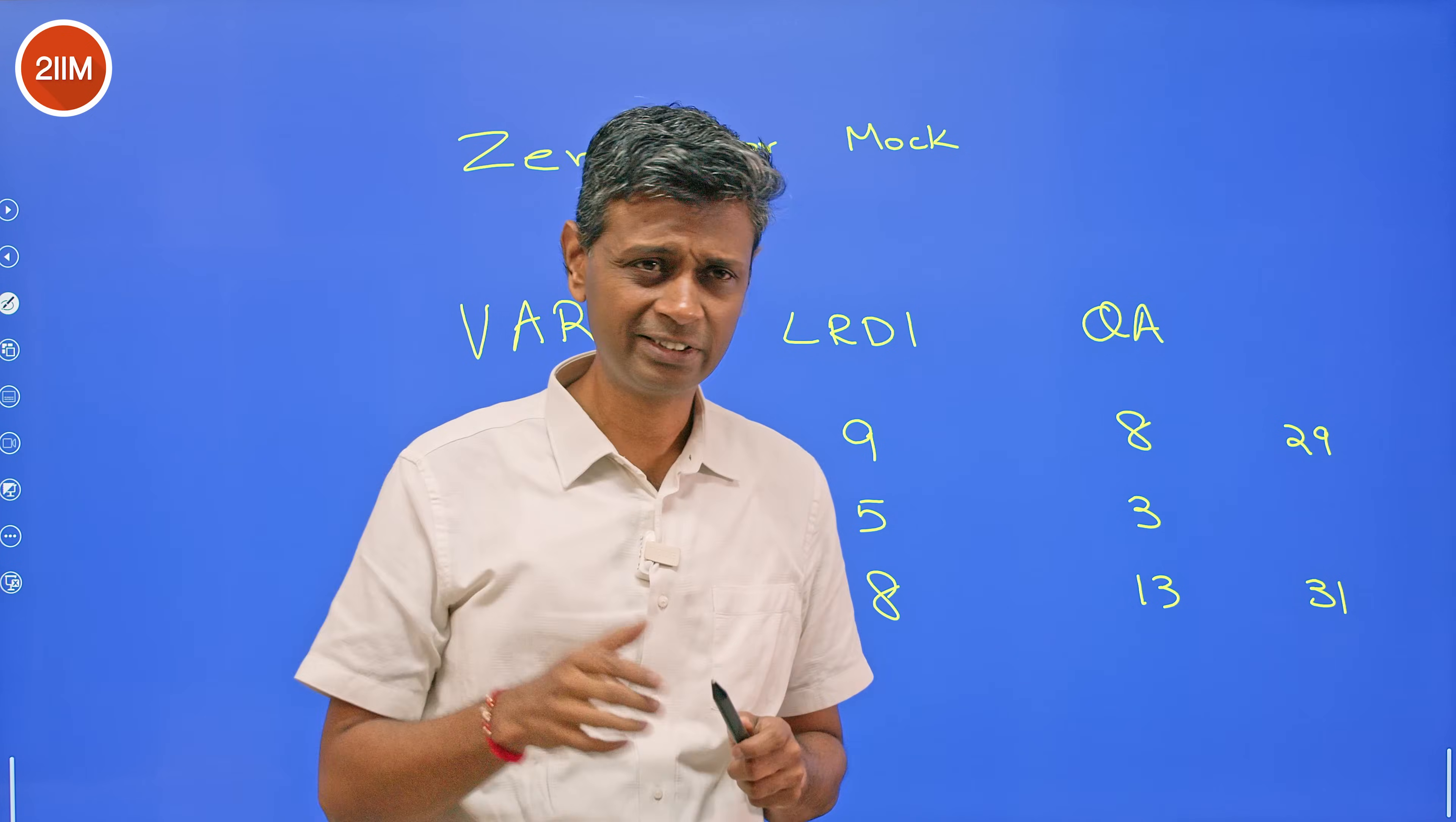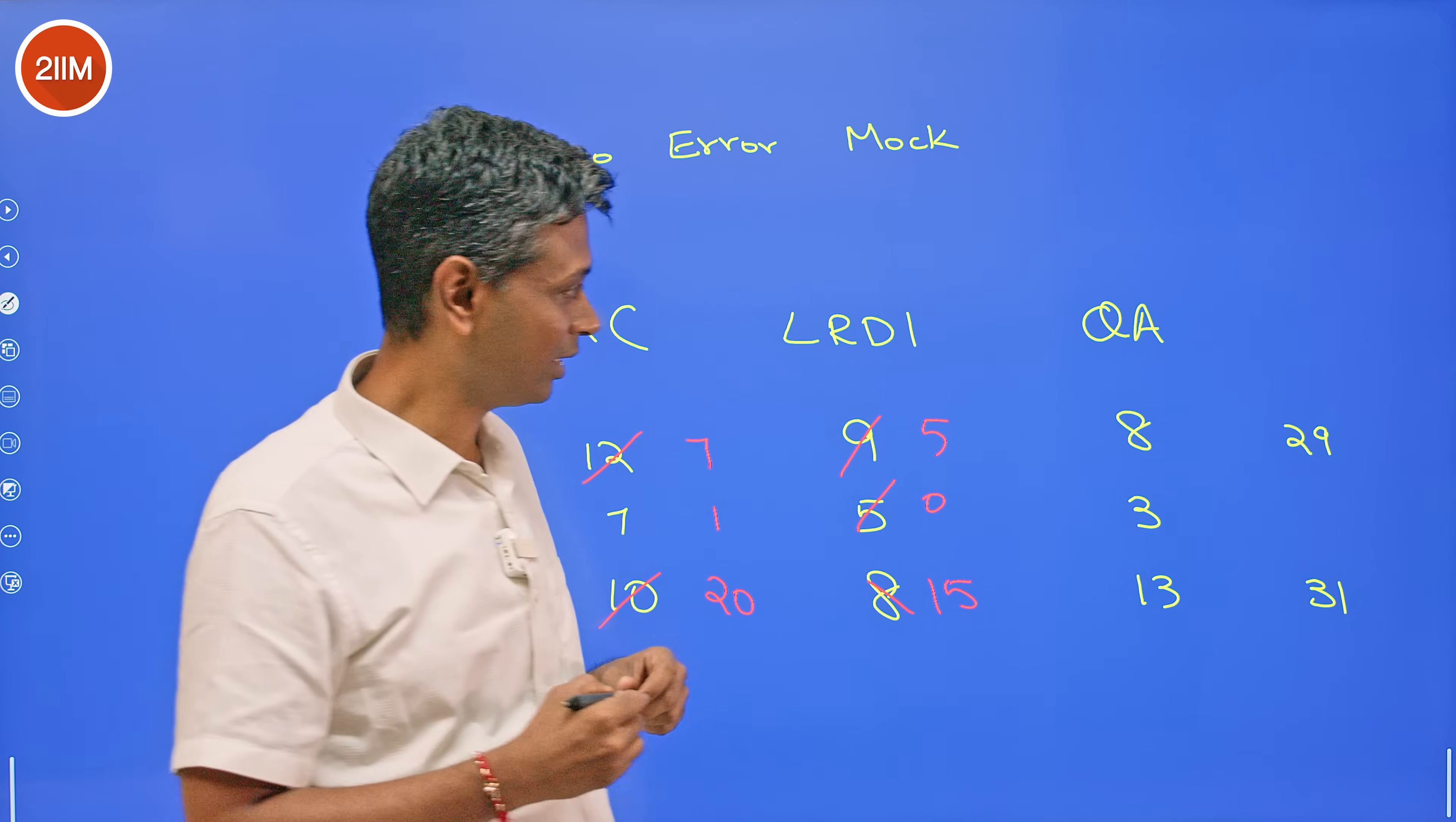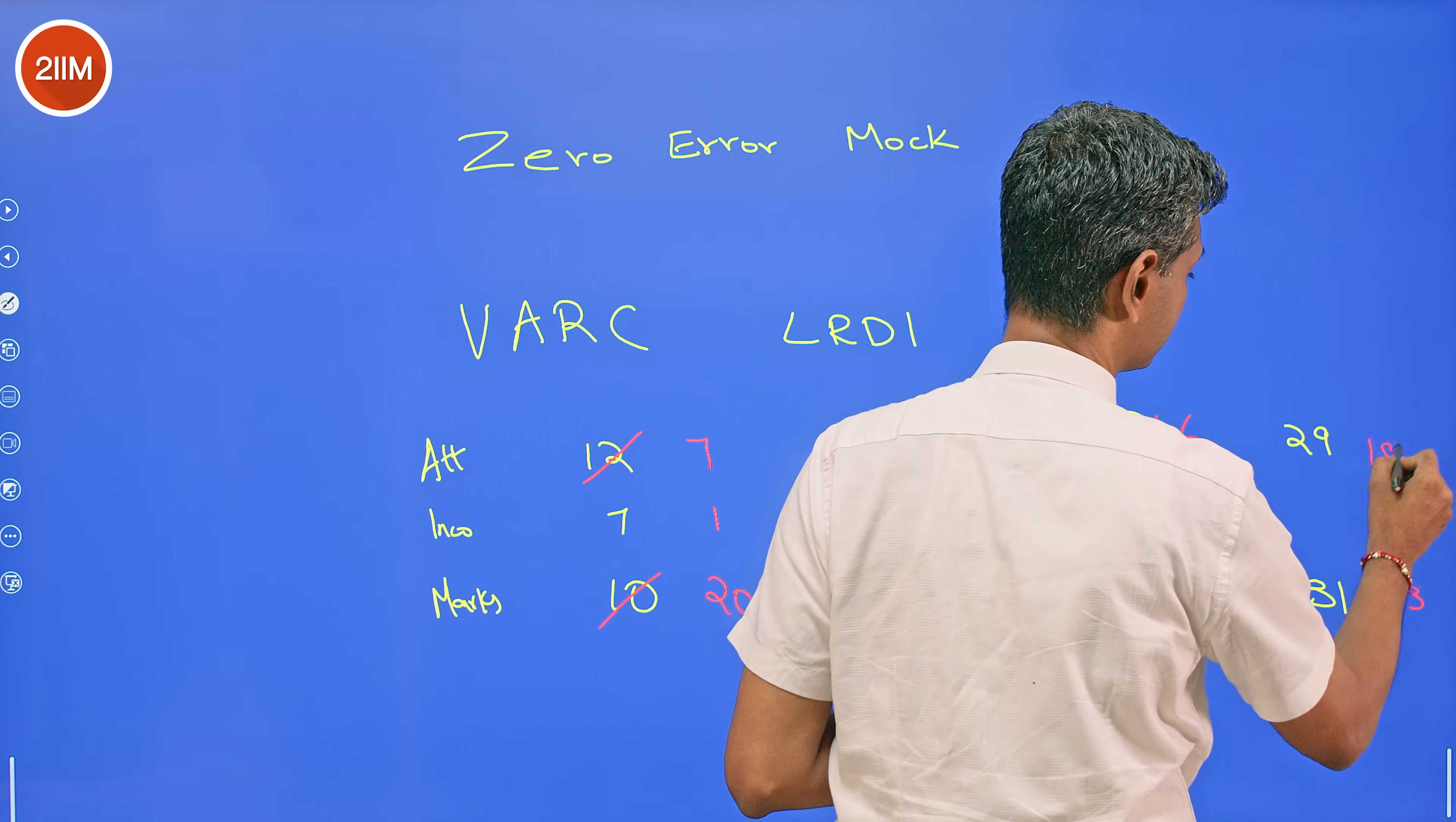In Quant, my home territory, the kind of place I really like, arithmetic - 5 questions were there, attempted them, got them right. One more I found easy, I attempted that, got that right.